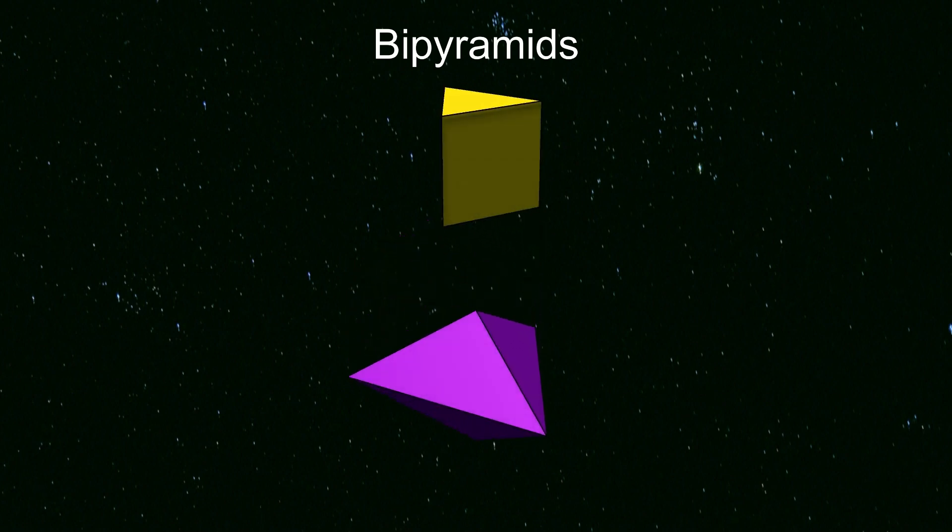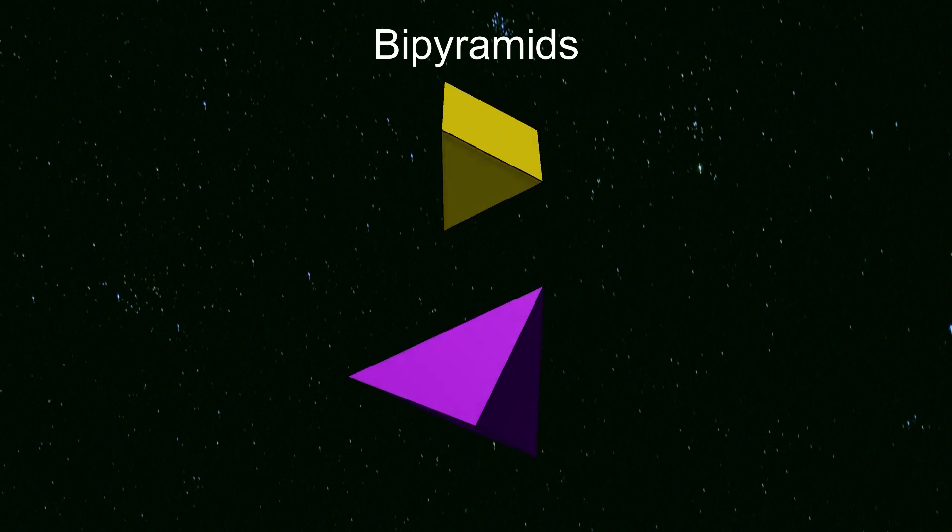This is two pyramids joined together at the base. The triangular faces are isosceles, not equilateral.